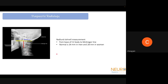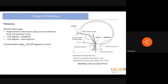The Redlund-Johnell measurement is from the base of the C2 body to the McGregor line — normal values are 34 mm in men and 28 mm in women; lesser values indicate basilar invagination. For associated pathologies, platybasia is evaluated with the Welcher basal angle — the angle between a line from the nasion to the tuberculum sellae and a line from the tuberculum sellae to the basion. More than 143 degrees is platybasia; less than 125 degrees is basal kyphosis.